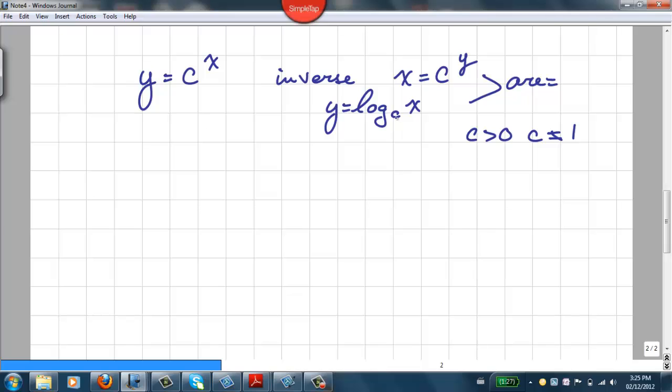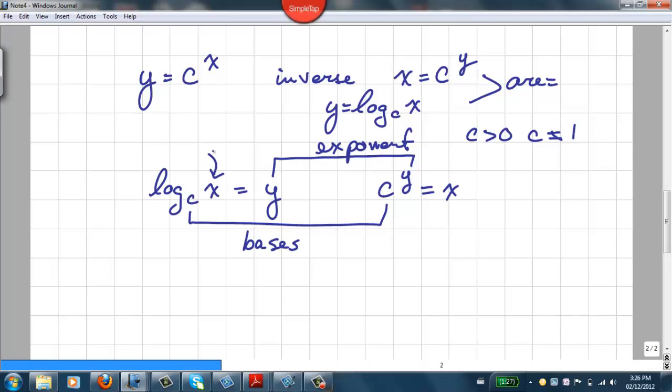As long as c is greater than 0 and c is not equal to 1. So the base of the logarithm here must be positive but it can't be 1. In fact we can look at this and say that log base c of x which is equal to y and c to the power of y equal to x have some things in common. This is our exponent and these are the bases. And this part here is actually called the argument.